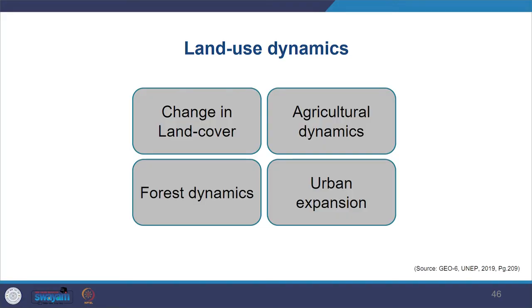Now let us go through some key state and trends for land. There is change in land use cover — due to climatic, geological and ecological processes. The most responsible activity for land cover change is agriculture, and this is going to increase further to facilitate the growing population's need for food. That pressure is not going to reduce but will keep increasing. We have limitations on how far we can expand agricultural land without losing ecosystem services.